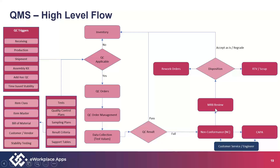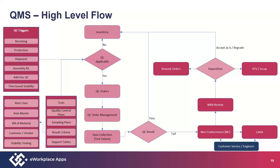Out of that process comes the material review board. Within core Acumatica, decisions are made: rework, scrap, return to inventory, or re-grade. Customer service and engineering also have tools within Acumatica CRM, and in some cases the non-conformance CAPA transaction is generated by customer service or engineering. Hopefully that gives people a good look at who we are, how we integrate within Acumatica, and a basic flow of the product.